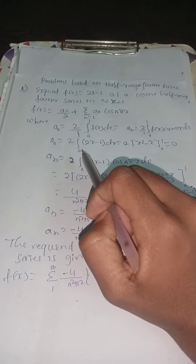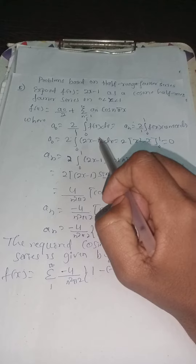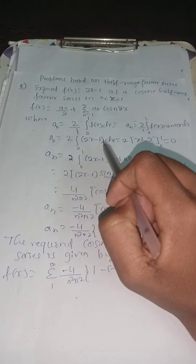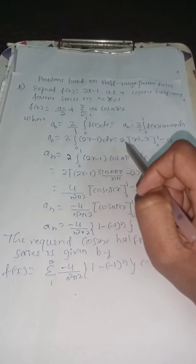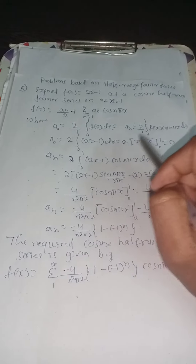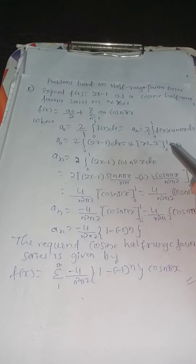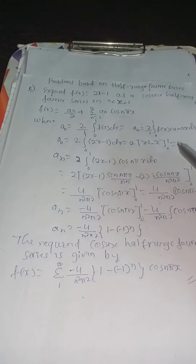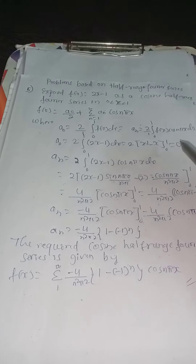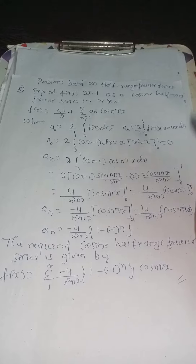a0 equal to 2 times integration from 0 to 1 of (2x - 1) dx, equal to 2 times [x squared minus x] with limit 0 to 1. Therefore a0 equal to 0.